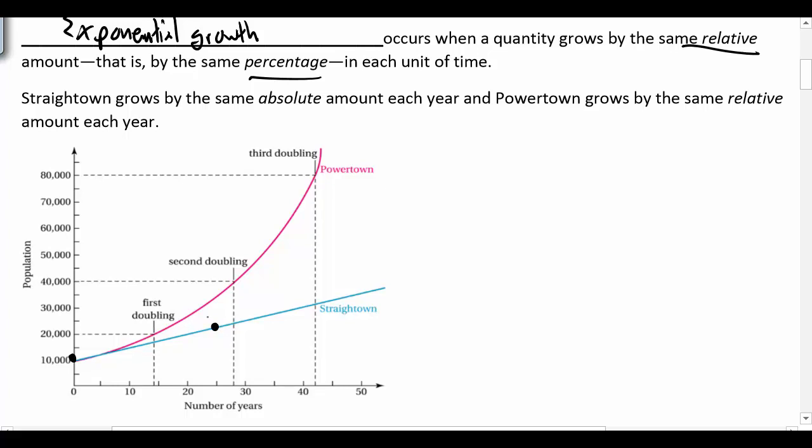And then it's like way past 50 by the time it gets to 40,000. Whereas in Powertown you start off at 10,000, and it looks like about 14 years you've now doubled to 20,000. And then here we've doubled the 20,000 to 40,000, looks like about 28 years or so. And then we've gone from 40 to 80,000, looks like about 42 years or so.